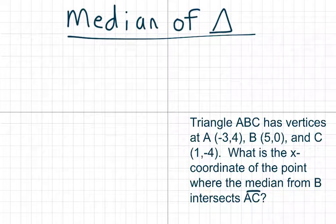Okay, so triangle ABC has these three vertices and we want to find the x-coordinate of the point that is the median.